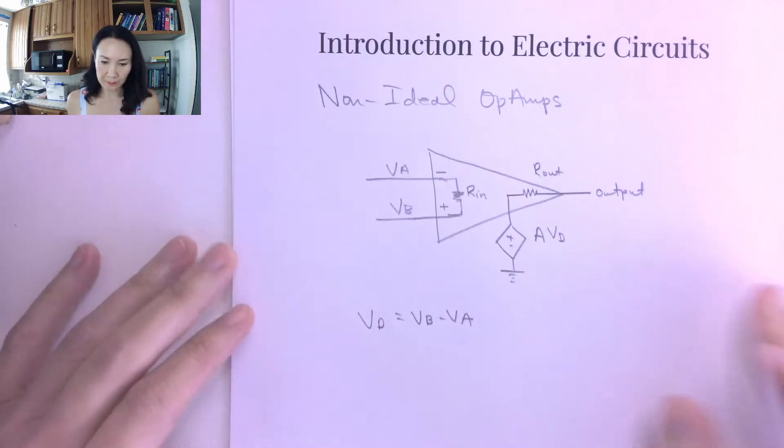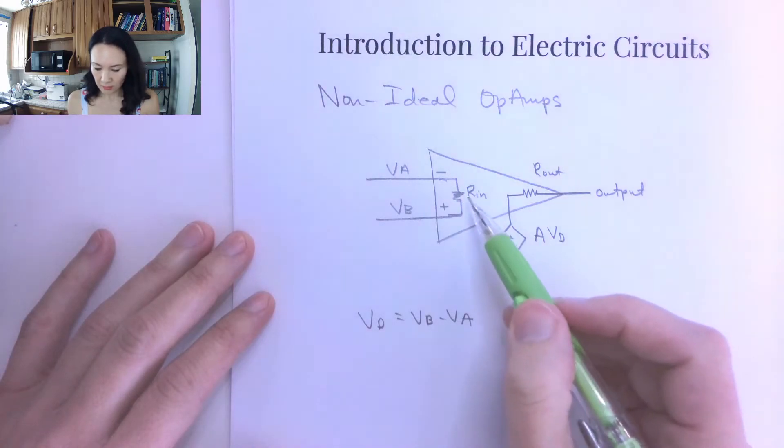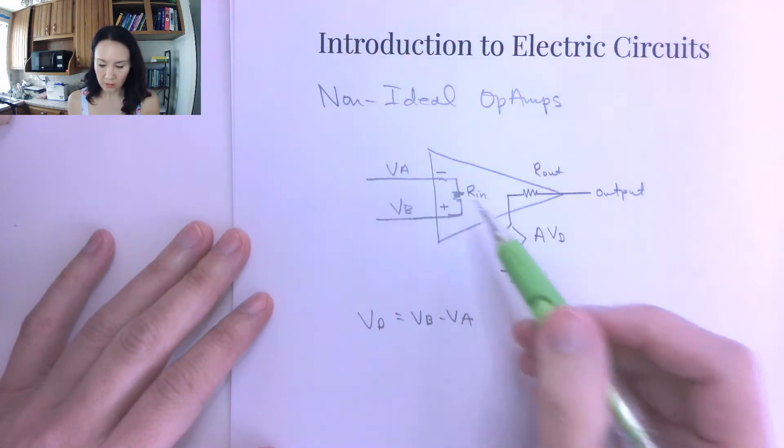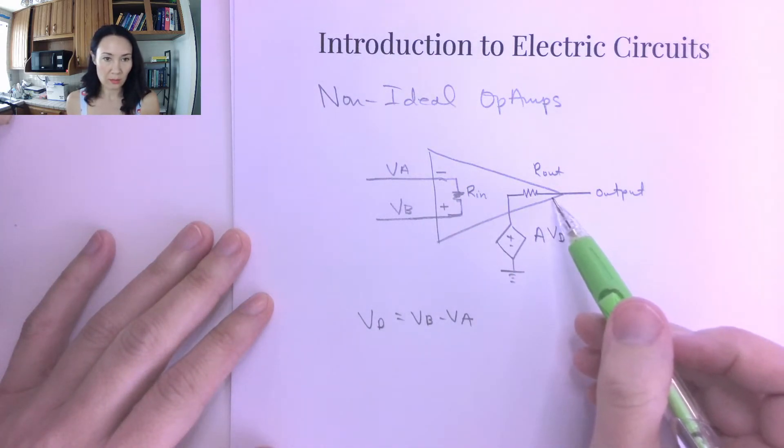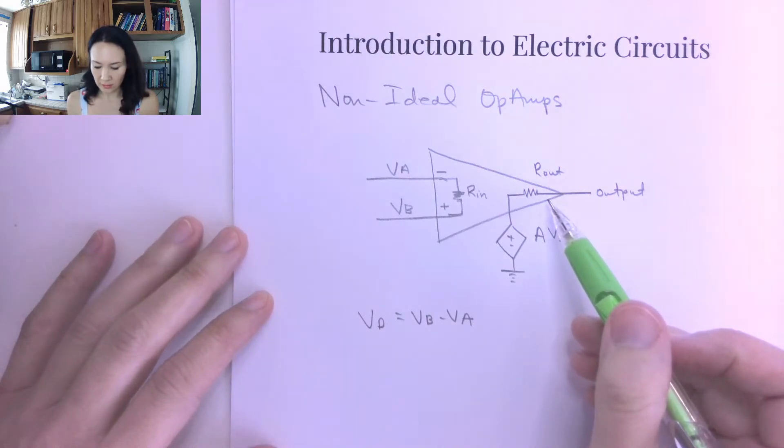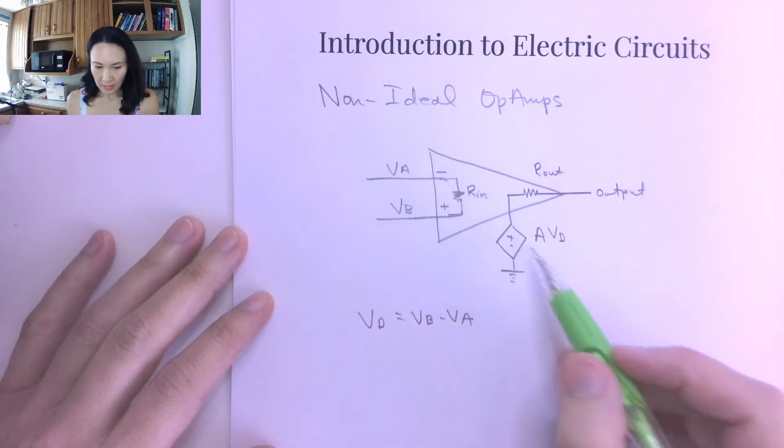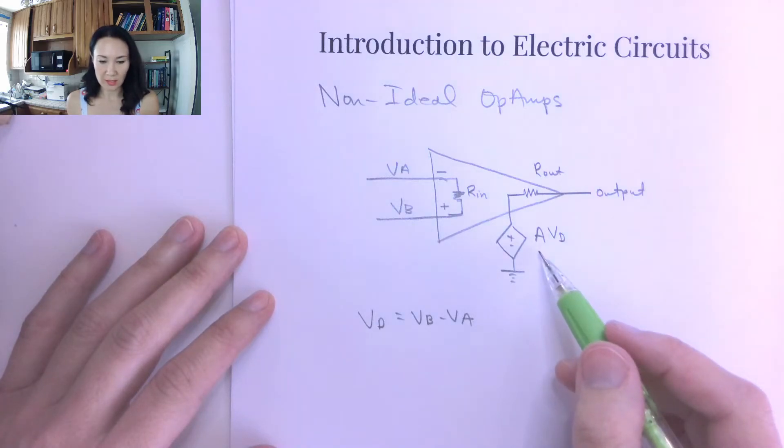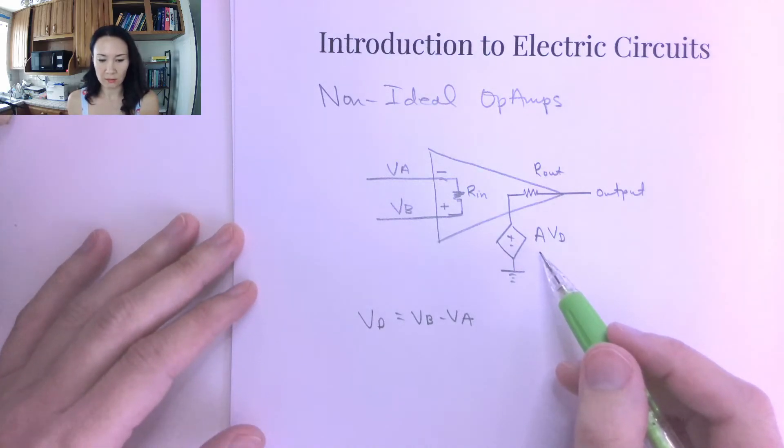And this Rn is going to be a really big resistor. And this Rout is going to be a relatively small resistor. And then our gain is also really huge. This is going to be something like 10 to the 5 to 10 to the 8 or something like that.